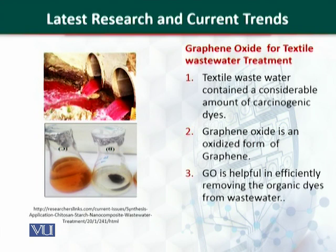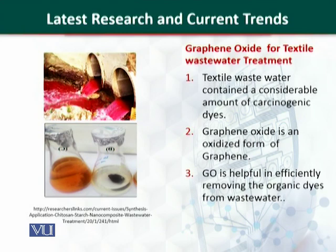However, recent published articles have shown that if graphene oxide is used with hydrogels, organic dyes can be removed from water very easily. The chemistry of graphene oxide plays a key role in this. Graphene oxide is an oxidized form of graphene and contains different functional groups such as carboxyl groups, hydroxyl groups, and phenolic groups. These groups attach with the different functional groups of the dye. As you can see in this slide, Congo red dye was purified using a graphene oxide-based gel.